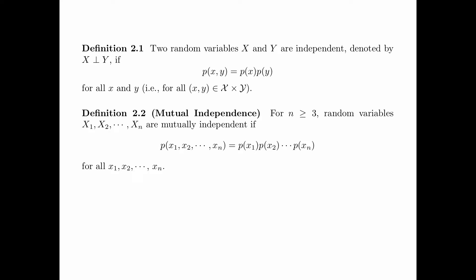Definition 2.2 is about mutual independence. For n greater than or equal to 3, random variables X1, X2, up to Xn are mutually independent if P(X1, X2, ..., Xn) equals P(X1) times P(X2) all the way to P(Xn).